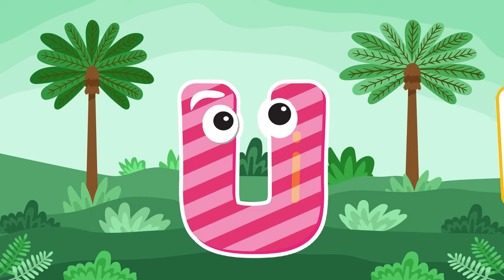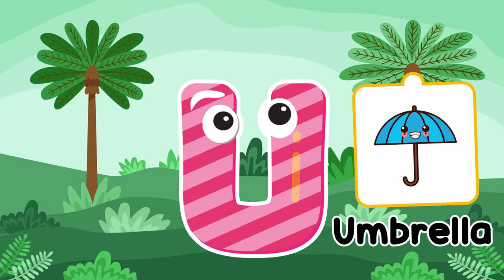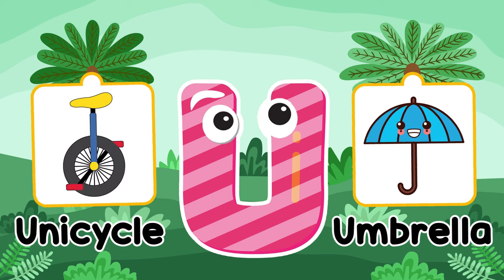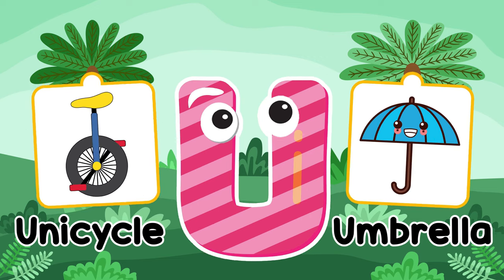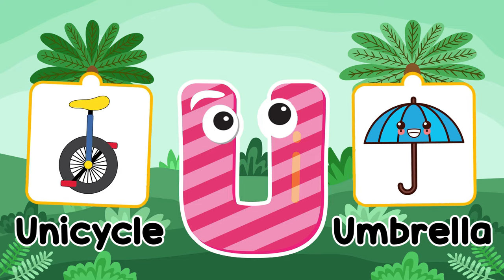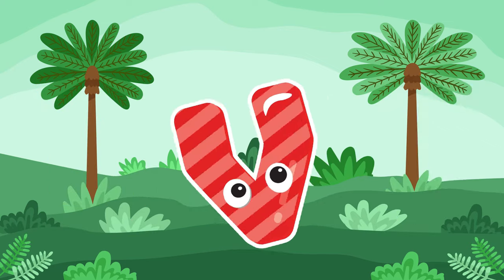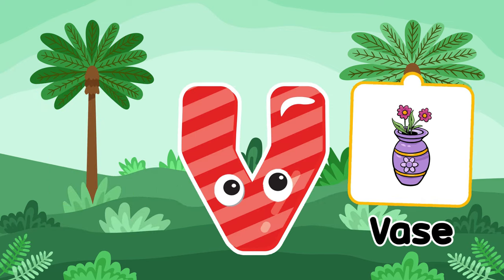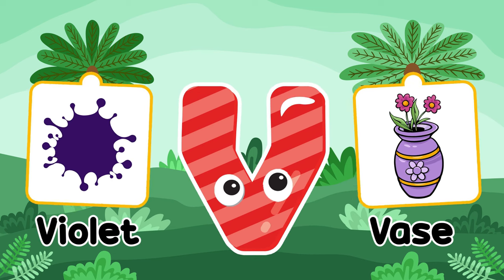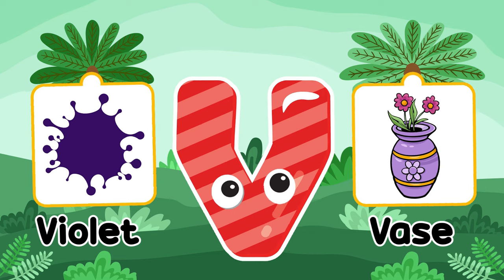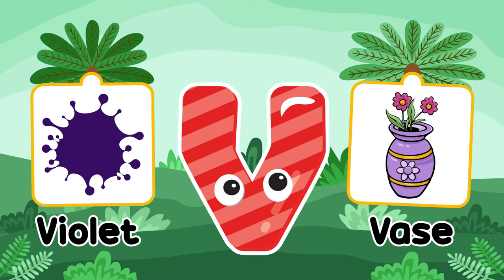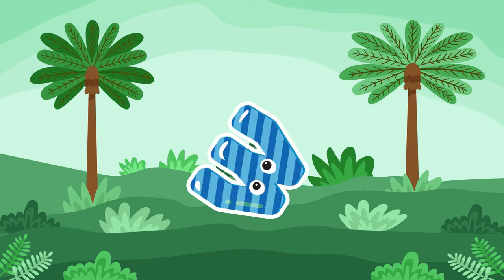U is for umbrella. U is for unicycle. U is for umbrella. U is for unicycle. V is for vase. V is for violet.